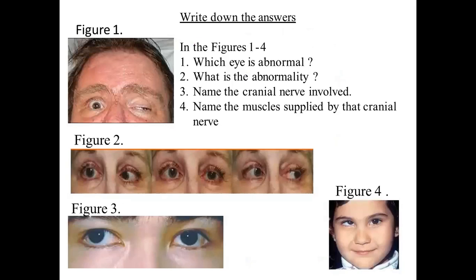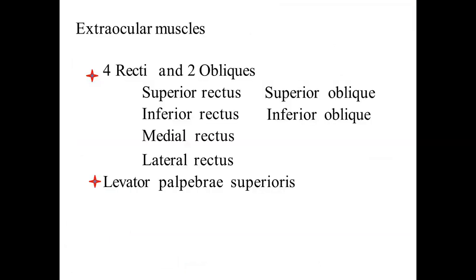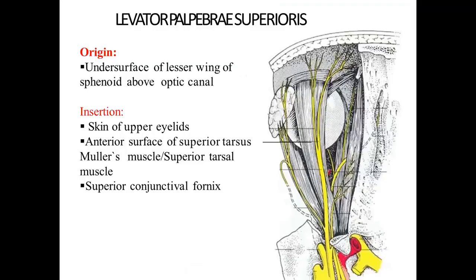In Figure 1, you can see which eye is abnormal, identify it, and name the cranial nerve involved and the muscle supplied by that cranial nerve. We'll study the extraocular muscles one by one. Oculus means eye. There will be four recti and two oblique muscles: the superior rectus, inferior rectus, medial rectus, lateral rectus, superior oblique, and inferior oblique. The levator palpebrae superioris is additional.